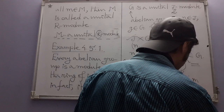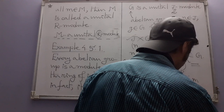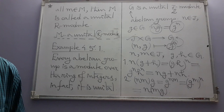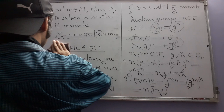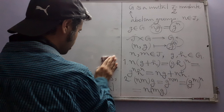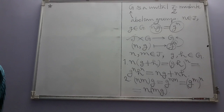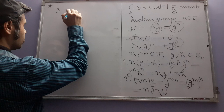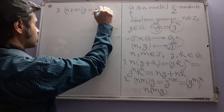For any ring element r and any ideal element m, we define r·m to be the product rm calculated inside the ring R. So we are using both the addition and the multiplication of R. Since M is a left ideal, this product rm belongs to M.